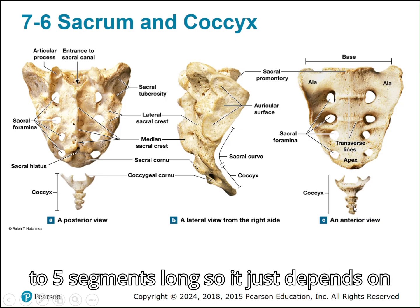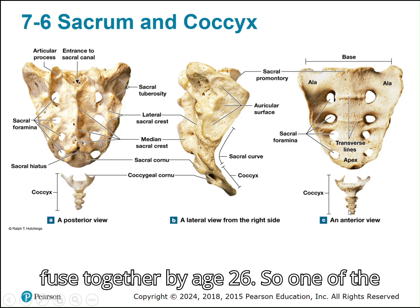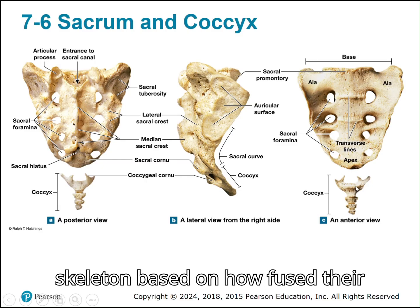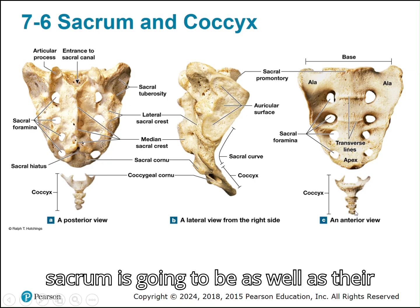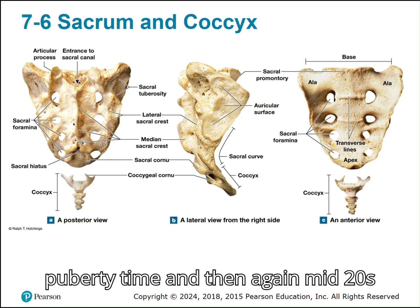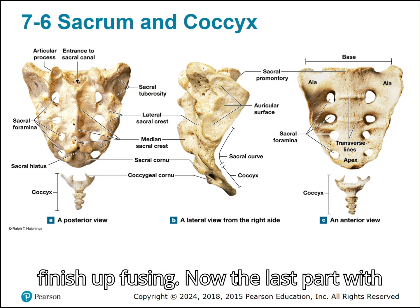The sacrum can be anywhere from three to five segments long depending on the individual, and they generally fuse together by age 26. You can actually age a skeleton based on how fused the sacrum and coccyx are — the coccyx starts fusing around puberty, and both usually finish fusing in the mid-20s to 30s.